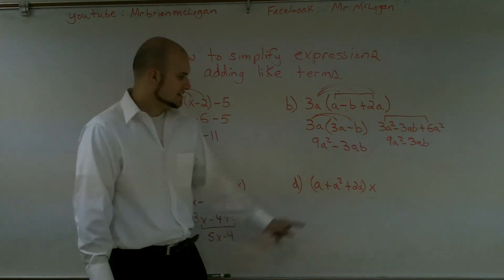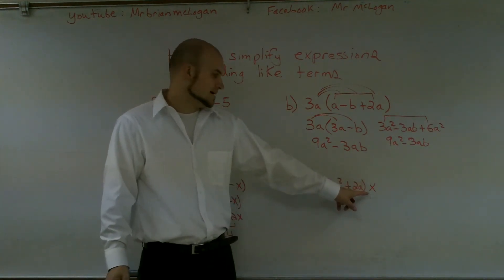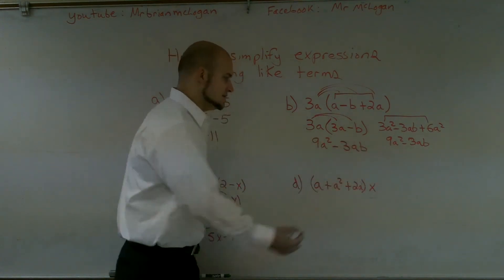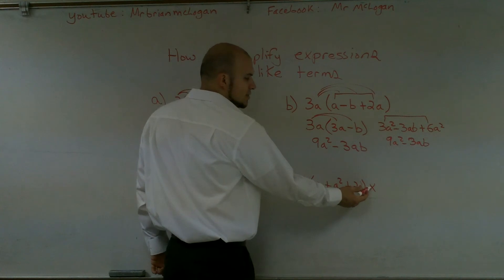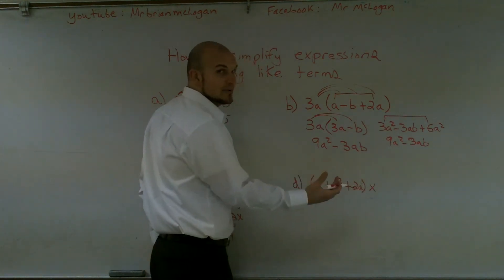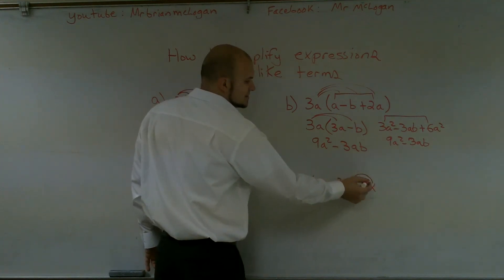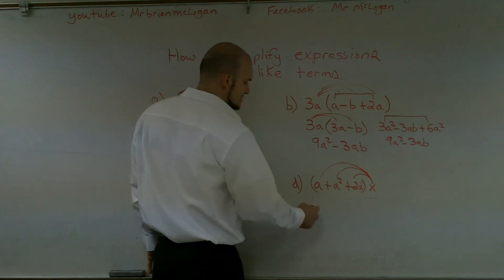Lastly, I have a distributive property again. Notice though, my number is now on the opposite side of the parentheses. It doesn't matter. Still, whenever you have a number or a variable or a term that is outside of the parentheses, and there's no operation sign, then we assume it's going to be multiplication. And when it's multiplication, you have to make sure you multiply times every single term inside of there.